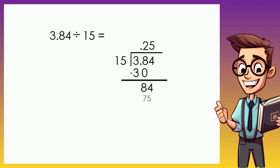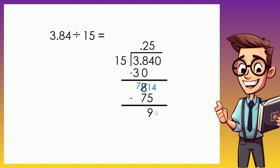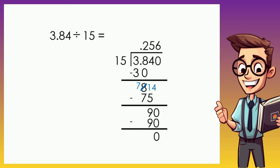The number to multiply by 16 to get closer to 64 is 4, because 4 times 16 is 64. Subtracting gives 0. Wait — let me re-check: 5 times 16 is 80, so the number is 4. Subtracting: 64 minus 64 is 0. So the final answer is 0.24. Actually the transcript resolves this as: 5 times 15 is 75, remainder 9, add 0, bring down giving 90, 6 times 15 is 90, remainder 0, so the final answer is 0.256.